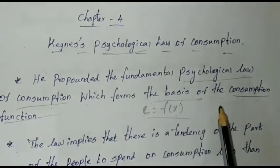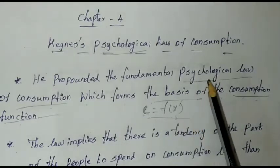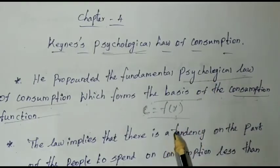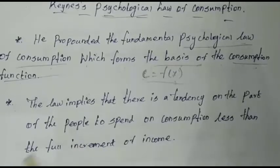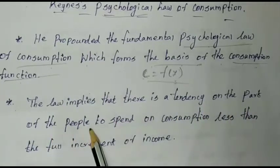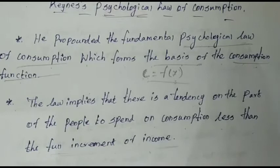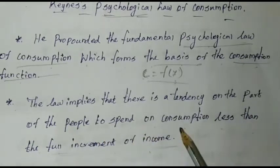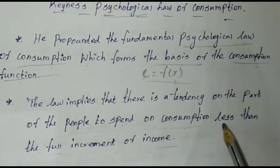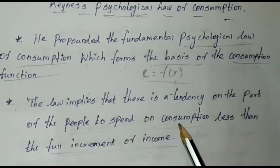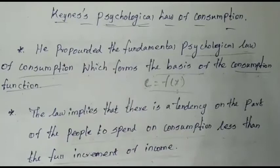If you are earning an amount of income, consumption follows. The law implies that there is a tendency on the part of the people to spend on consumption — that is the assumption.